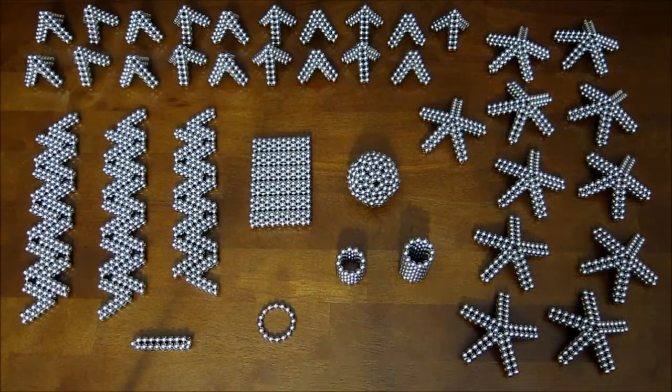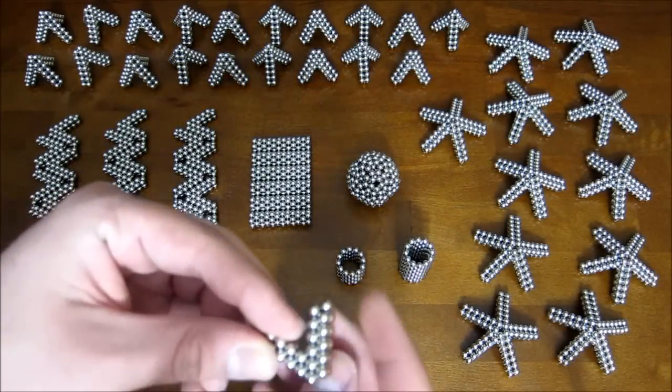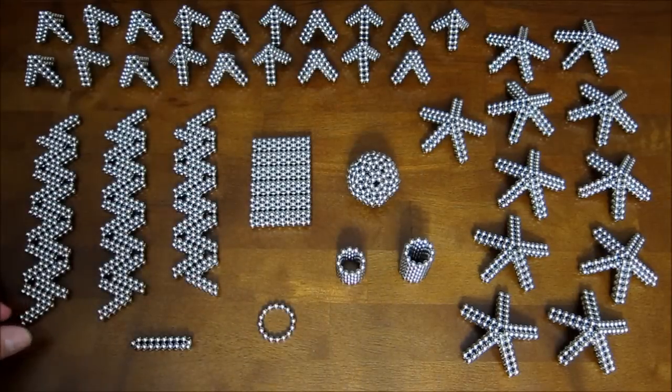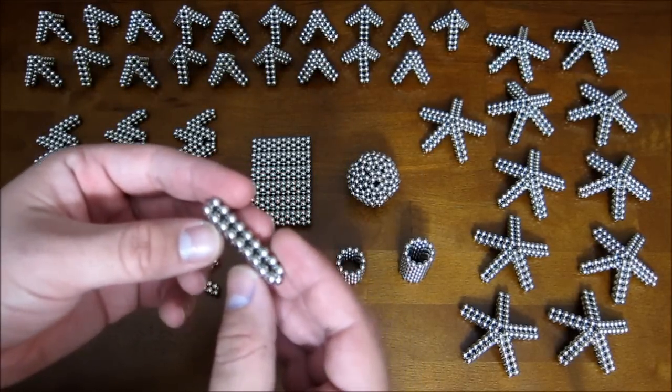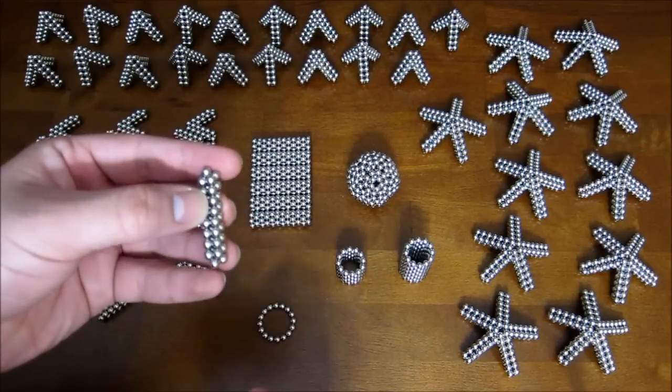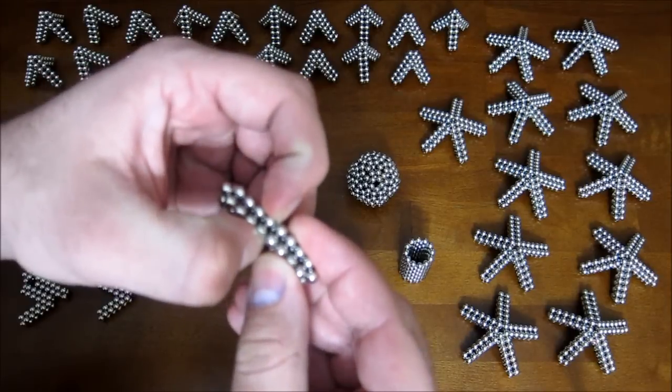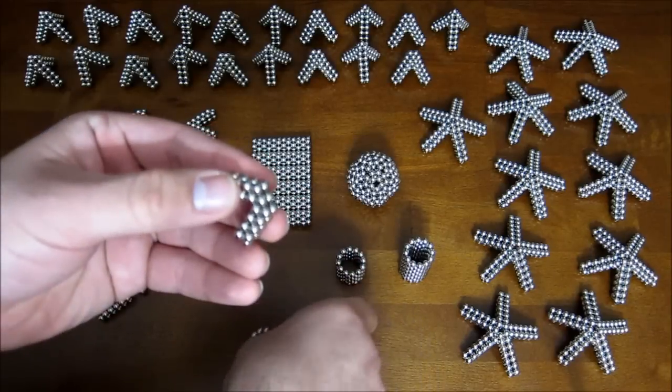You're also going to need 30 of these angular pieces. The way that you make those is you start off with a straight piece that's made out of two stacked rings of 18. And on the side with points, you can split it in the middle and bend it down into this shape.